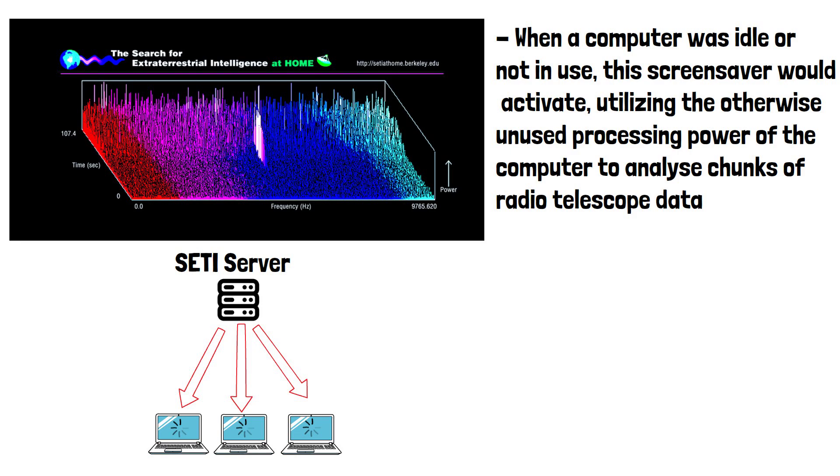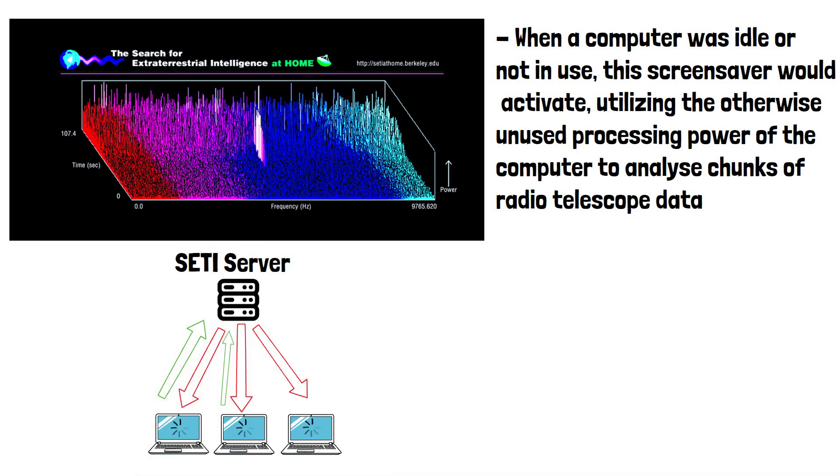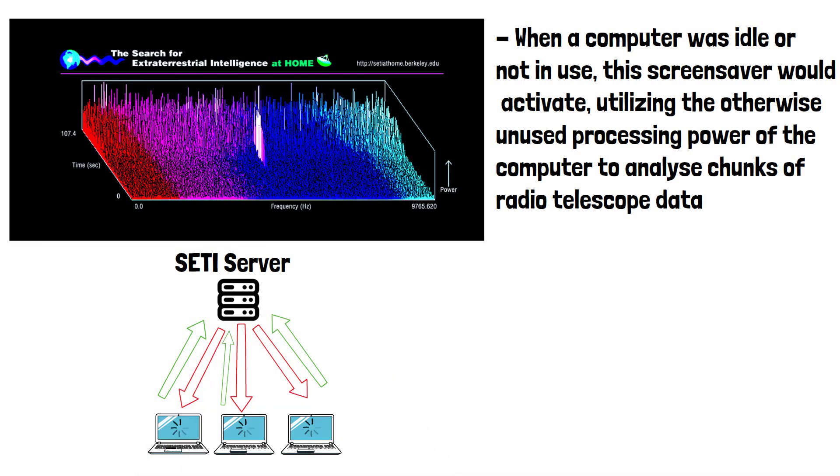Participants' computers processed these work units and sent the results back to the SETI at home servers. This collective effort created a distributed computing network, effectively creating one of the world's most powerful supercomputers at the time.